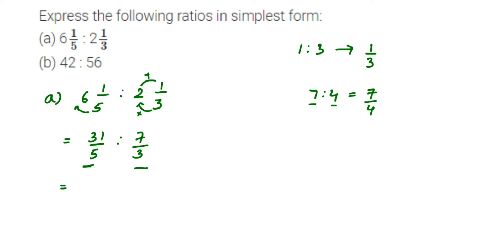In our problem, the ratio (31/5) : (7/3) can be converted into division form. This becomes (31/5) divided by (7/3). The 'is to' in a ratio can be written as division. So we have two fractions with division in between.